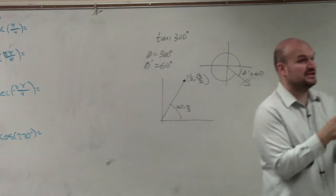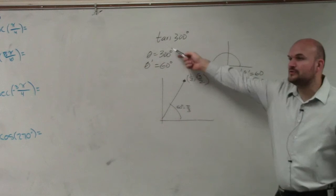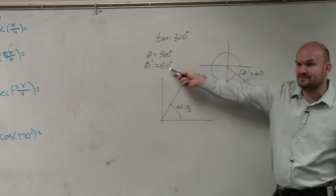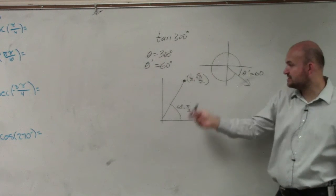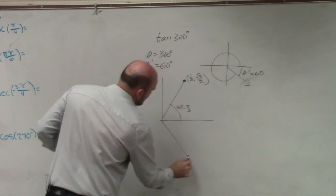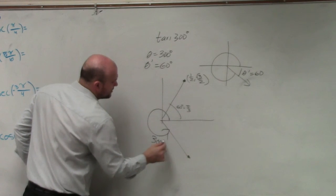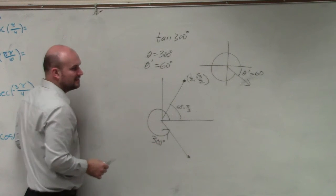Remember, the tangent of theta is equivalent to the tangent of theta prime. It doesn't matter if you do the tangent of 300 or the tangent of 60 degrees. Because the point is exactly the same. The only difference is, this point is in which quadrant? The fourth quadrant.